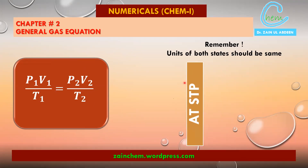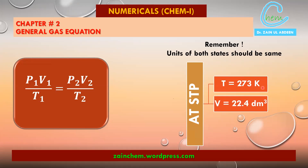At STP conditions, which often appear as the initial or final state in numericals, you need to remember: temperature is 273 Kelvin, volume is 22.4 decimetre cube, and pressure is 1 atmosphere or 760 torr.